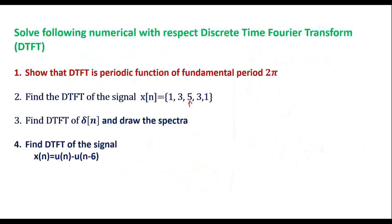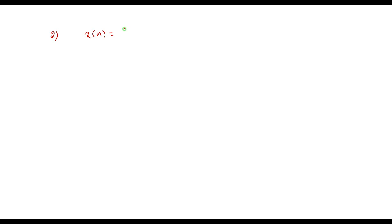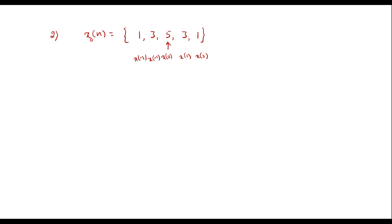Now let me consider the second example: find the DTFT of the signal x(n) = {1, 3, 5, 3, 1}. Here, the arrow mark indicates x(0) = 5. So x(1) = 3, x(2) = 1, x(−1) = 3, and x(−2) = 1. Now we will try to find the DTFT of this signal.